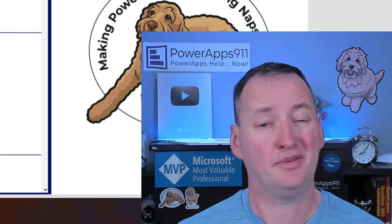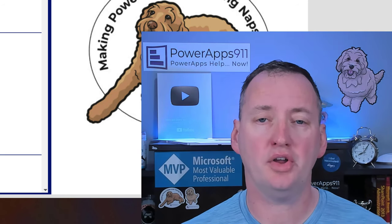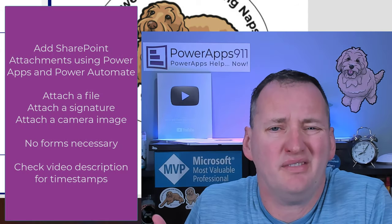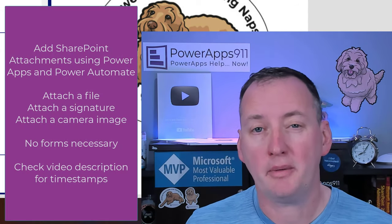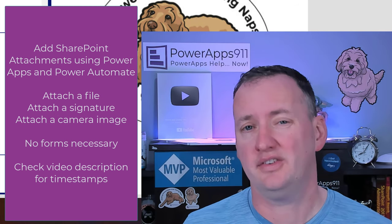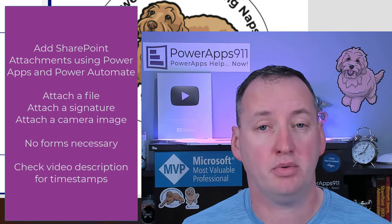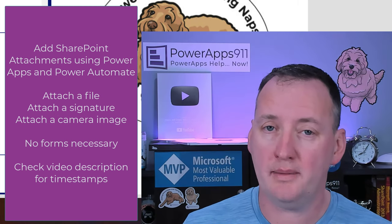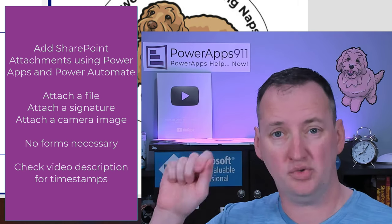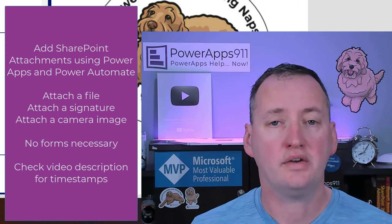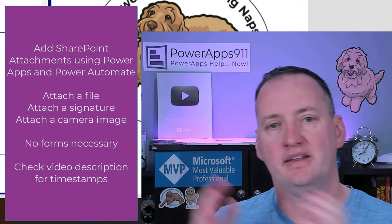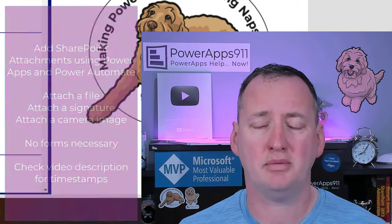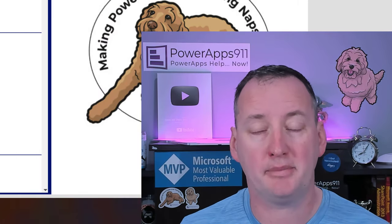In today's show, we're going to talk about Power Apps with SharePoint attachments. We all know you can use the form control to get SharePoint attachments up there, but it's not a lot of fun. So what we're going to talk about today is how we can use flows to get attachments into SharePoint from Power Apps. And we're not just going to do files — we're also going to do images from a pen input, signing a capture, taking a picture with a camera, and how to get that attached. We're going to learn those mechanics today and figure out how to solve this problem of SharePoint attachments with Power Apps.